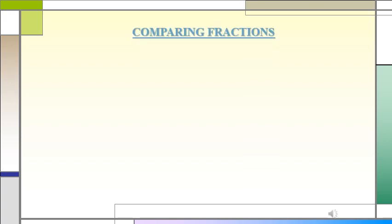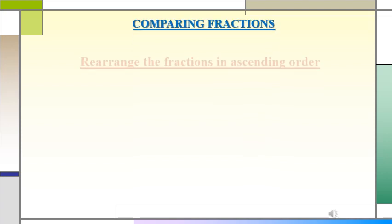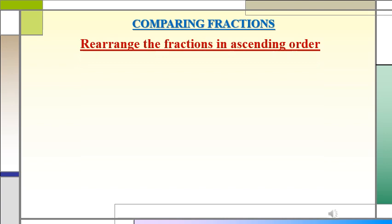Students, let's take another example to compare fractions and rearrange them in ascending order, that is from smallest to the greatest. Let's take an example: 1/2, 2/3, 3/4, and 1/3. As you can see, the numerators and the denominators are different, so we have to first convert them into equivalent fractions with the same denominator, and then we can compare.